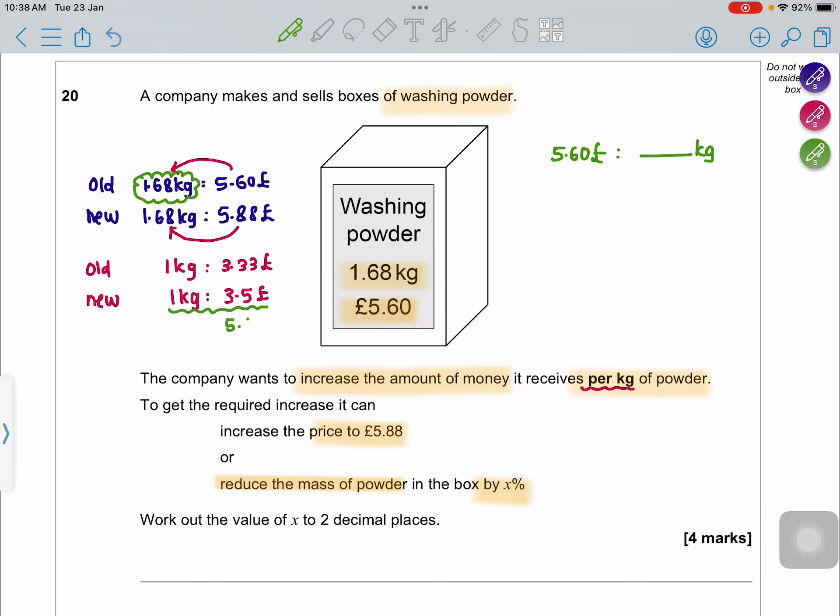In order to calculate the weight, you're going to do £5.60 divided by £3.50. So that amount is going to be 1.6 kg.